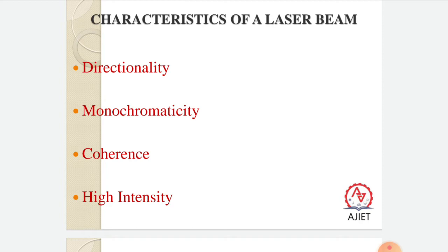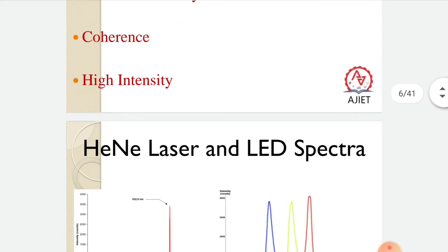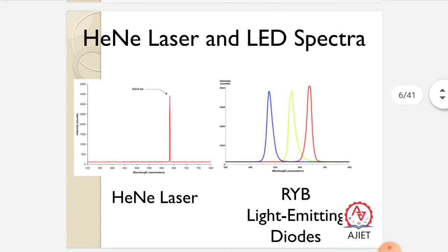Last is high intensity — laser beams are very intense light that can penetrate through several thicknesses of any material. To summarize, the four main properties of laser are: directionality (highly directional), monochromaticity (single color), coherence (constant phase difference), and high intensity (can penetrate very thick material). Next, let us compare laser with LED spectra.